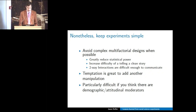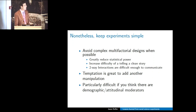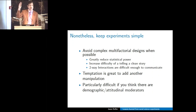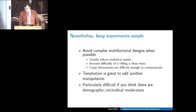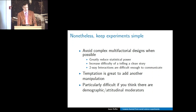The temptation is always to add another element because there's another thing that's really important. Or if you're worried about getting publications, it's a hedging strategy—if your first manipulation doesn't work but a second one does, you have a fallback. This is particularly difficult if you think there are important attitudinal or demographic moderators. If you think the effect of one manipulation is affected by pre-existing attitudes, and you have two manipulations, you're already in the world of three-way interactions—which are not hard statistically but really hard to communicate.